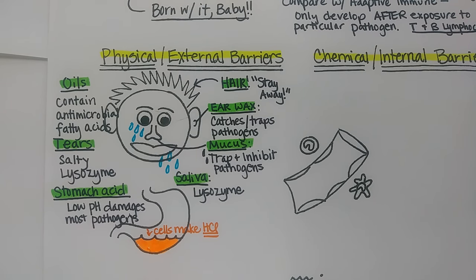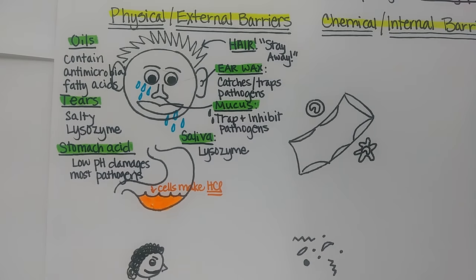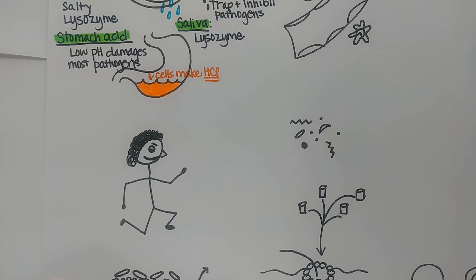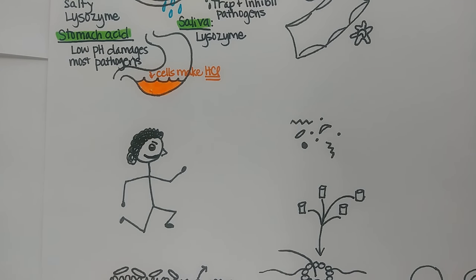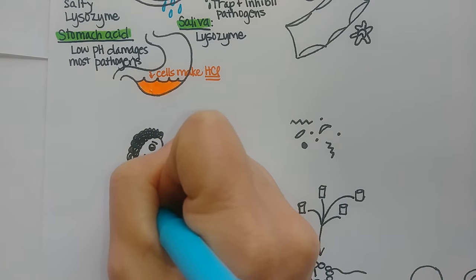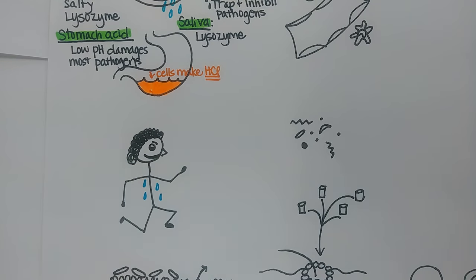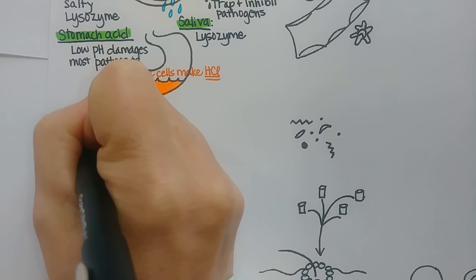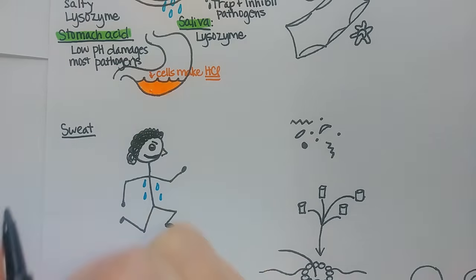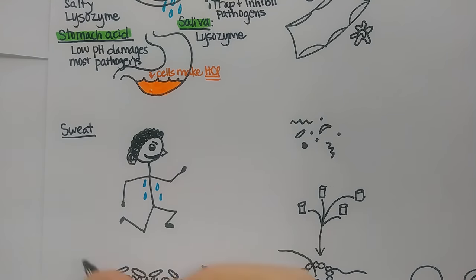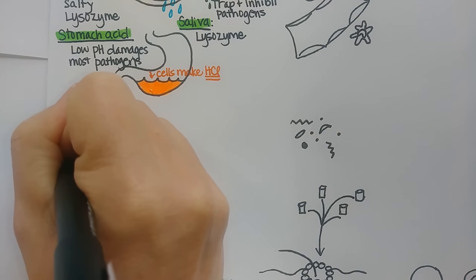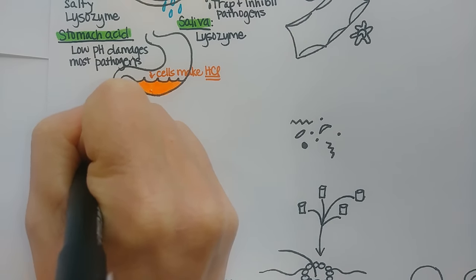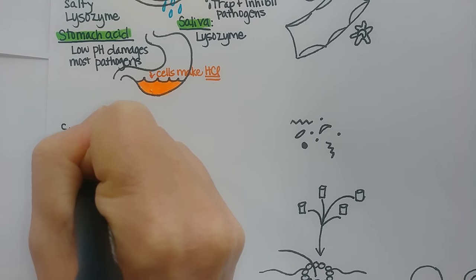Moving on to this figure of a person going on a run — sweat is important in helping to prevent disease. Sweat is another bodily fluid that contains lysozyme, and like tears, it's salty. So very similar to tears: it's salty and it contains lysozyme, both of which help inhibit pathogens.